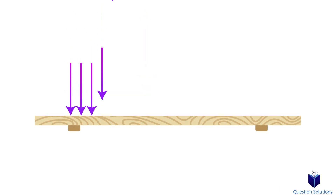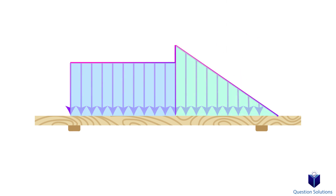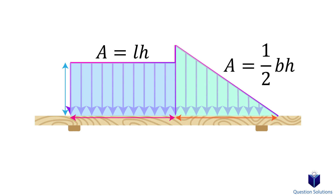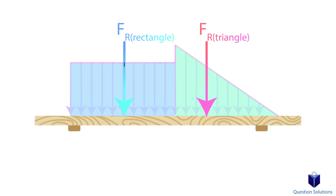Now if the distributed load is simple — for example, made of rectangles and triangles — you don't have to integrate. Instead, simply find the area under the graph by multiplying length by height, or using the appropriate equation for the area of a triangle. We then place the individual resultant forces at the centroid of each piece. For a rectangle, that's simply the midpoint. For a right angle triangle, it's one-third the length of the base.